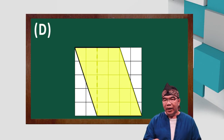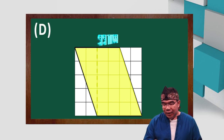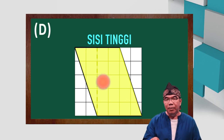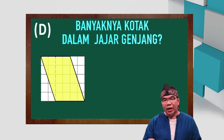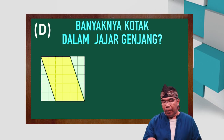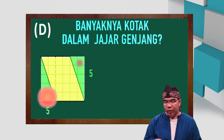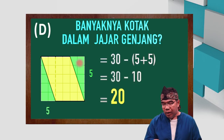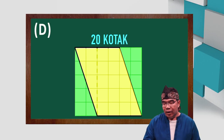Lihat gambar yang D. Alasnya 4, tingginya 5. Kita lihat banyaknya kotak dalam jajar genjang berikut. Perhatikan di sini, ada 2 ke sini 5, berarti ada 5 buah kotak yang di luar, dan 5 buah kotak yang di luar juga. Sedangkan banyaknya kotak di sini: 6 dikali 5 adalah 30. Berarti, banyaknya kotak yang ada dalam jajar genjang D adalah 20 buah.